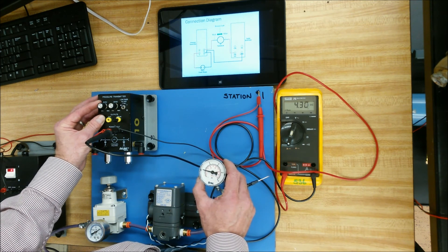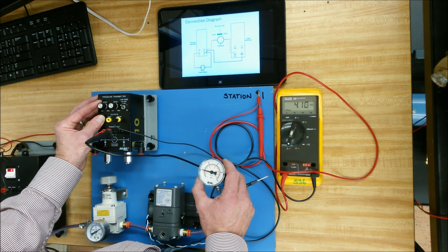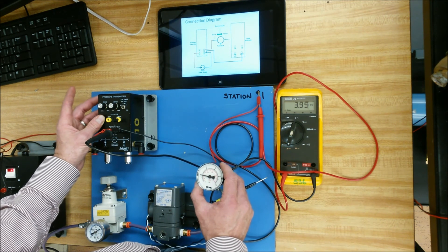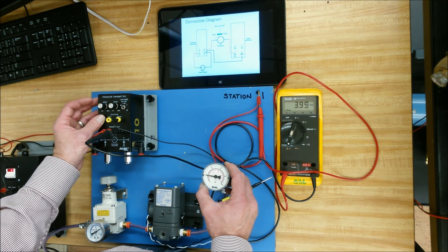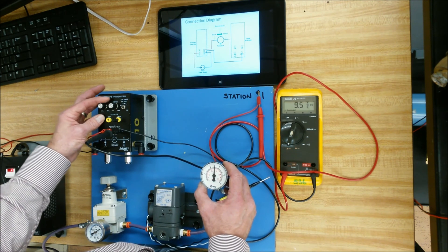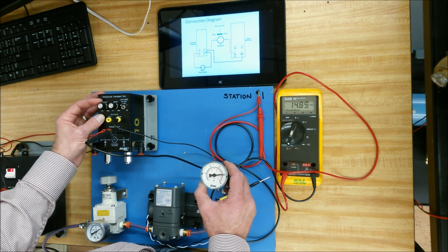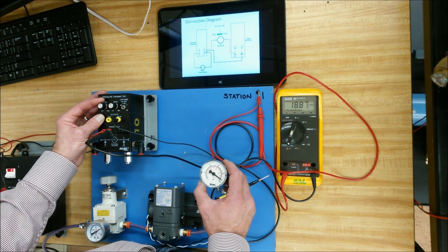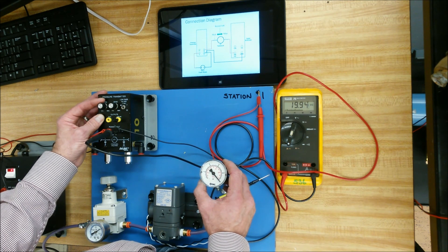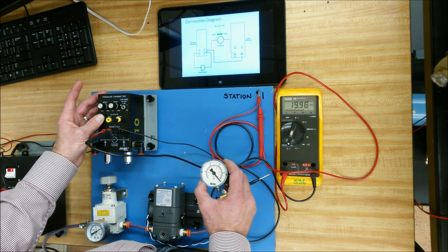So again, we're going to 4 milliamps. Okay, so 4 milliamps is giving me 3 psi. Beauty. Now I'm going to go up to 20 milliamps and just make sure that I'm still getting the 15 psi. Looks good.